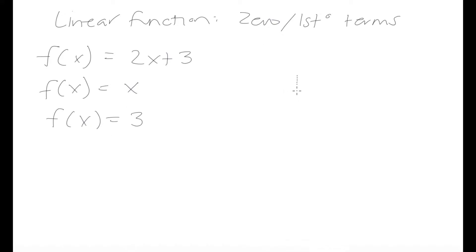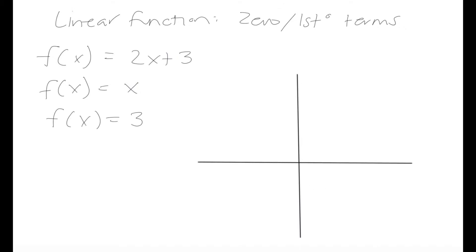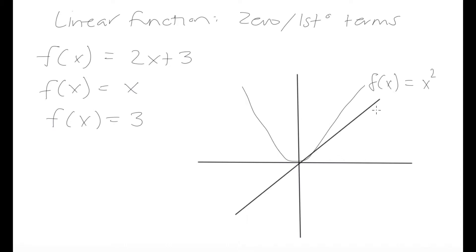Let's look at two different graphs of functions and see some key differences between a linear and a nonlinear function. Here we have an example of a nonlinear function: f(x) = x squared. And here is a linear function: f(x) = x. This darker black line is the linear function, whereas the lighter line is the nonlinear function.